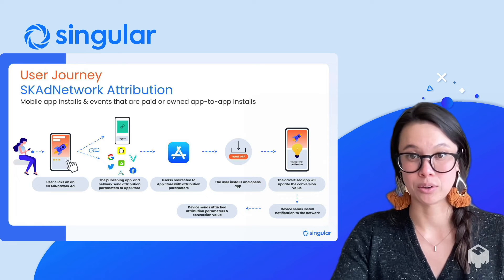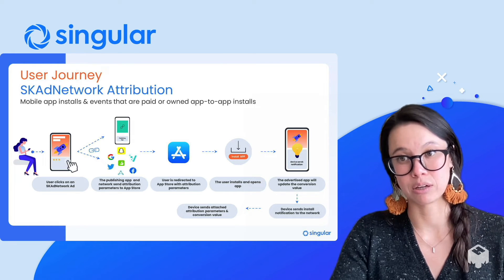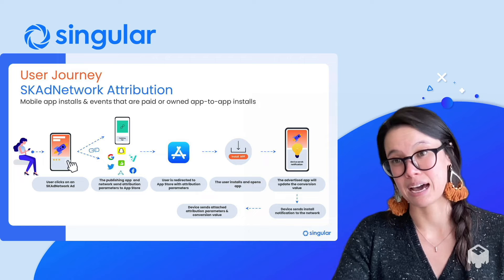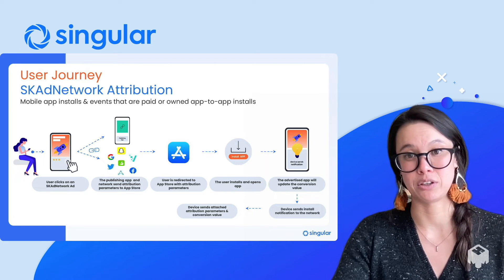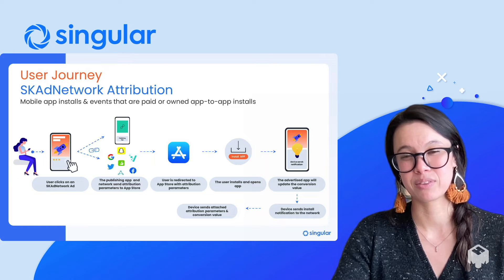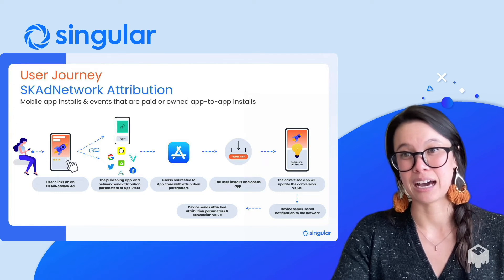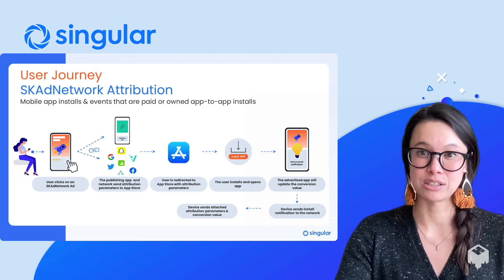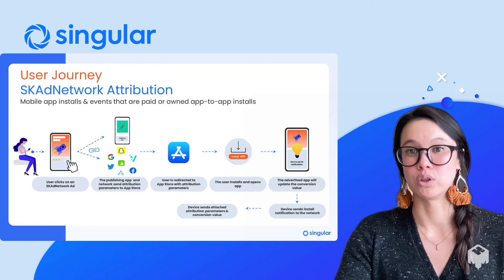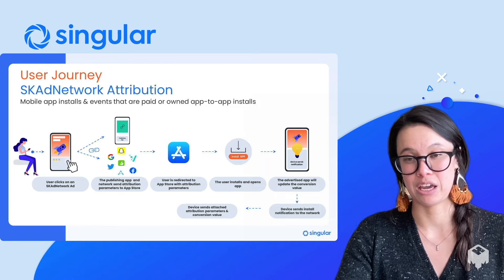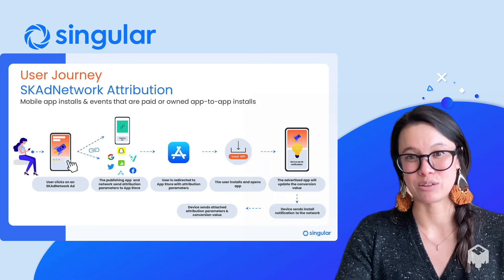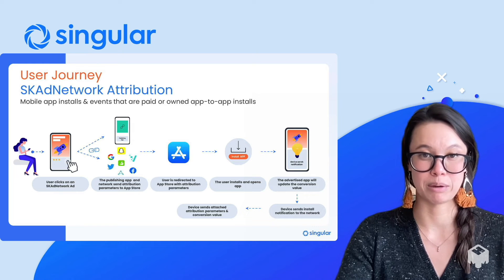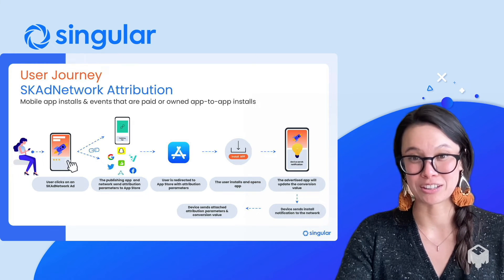The advertised app also does not receive any information about the original ad or publisher. This allows the network to know that an install has happened, but the install is not tied to a specific user, which preserves the user's privacy. Outside of the notification delay, Apple has also implemented a privacy threshold barrier. If this threshold barrier is not met, some post-install data and certain granularities will not be recorded on the install postback notification. Apple has not publicly defined the privacy thresholds, but many in the industry have come to some conclusions on what those thresholds might be — though they remain a big challenge.